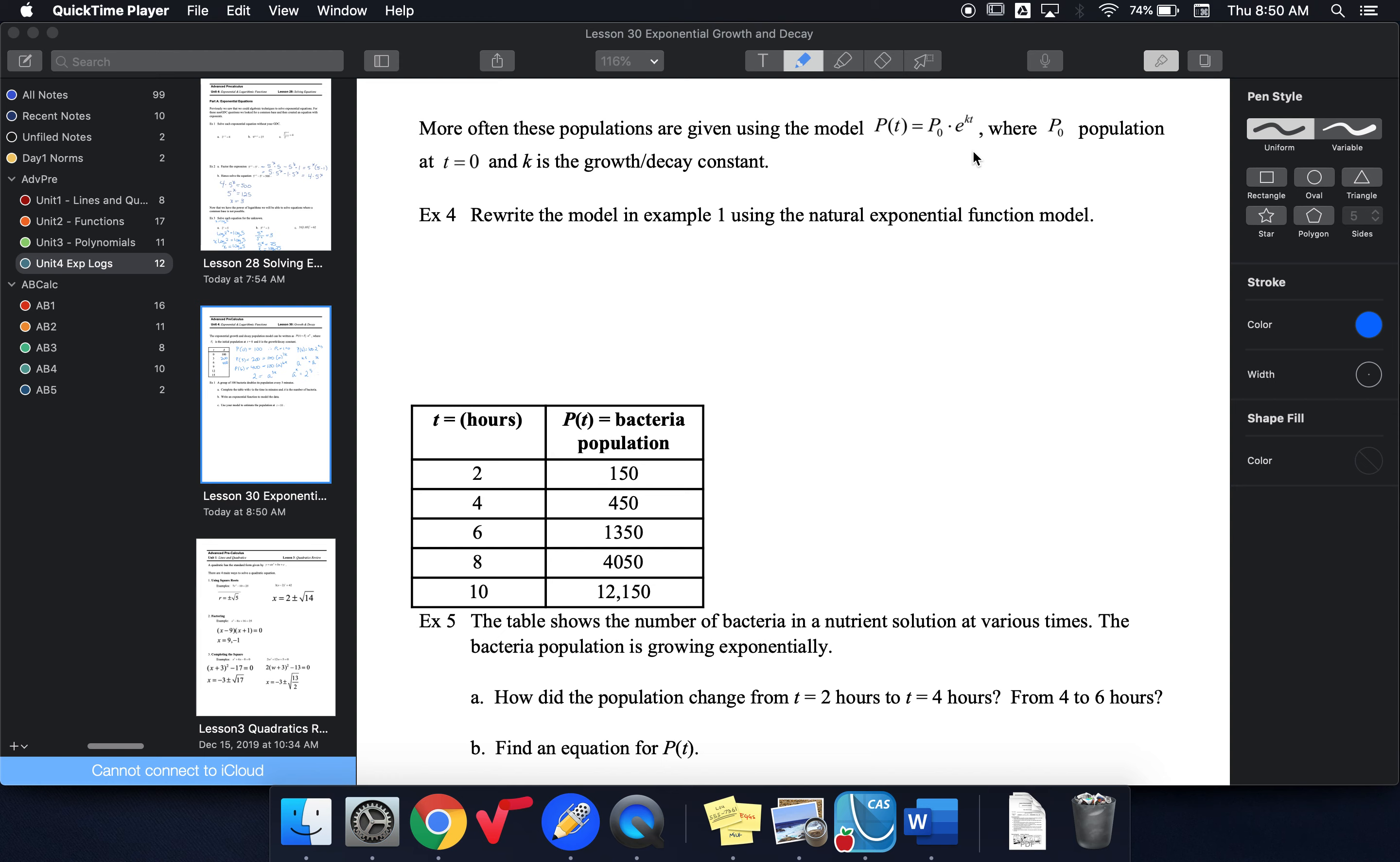Instead, the more common growth equation uses a constant base of e. So let's look at how we can change the model from example 1 and rewrite it in this form. Example 1's equation should have been 100 as the initial population, 2 was our growth factor, and that was happening every 3 minutes, so our K value was 1/3 to the t.